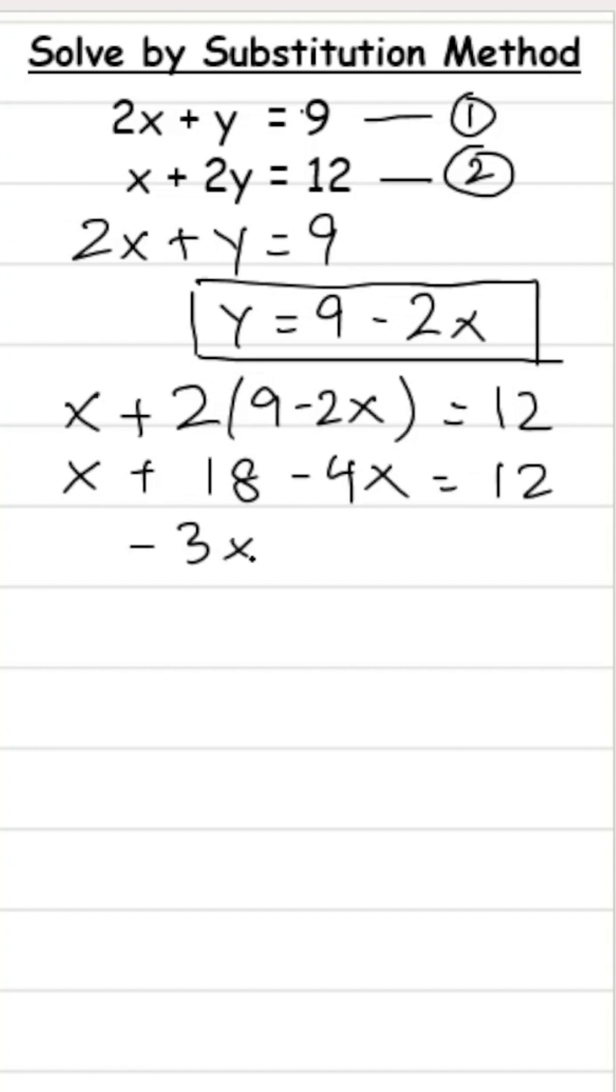x minus 4x is minus 3x equals 12 minus 18. Minus 3x gives me minus 6, so x equals 2.